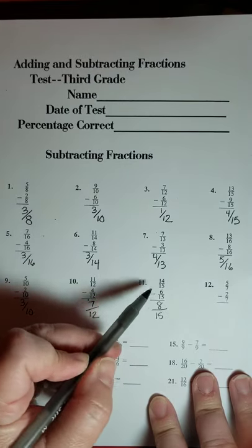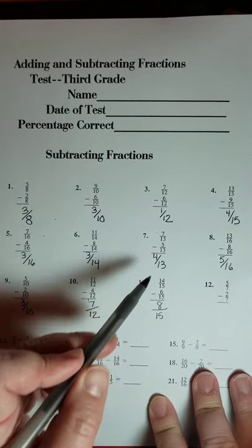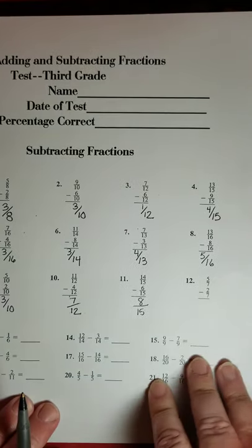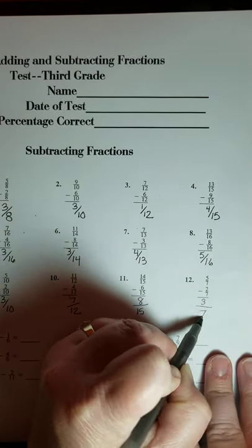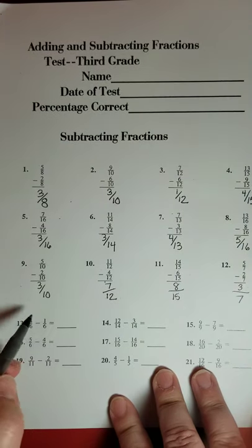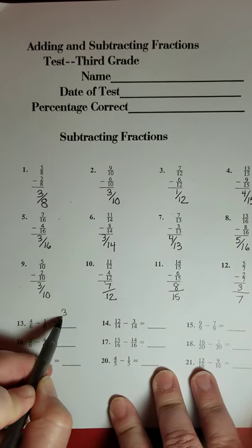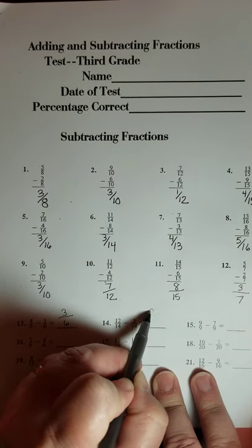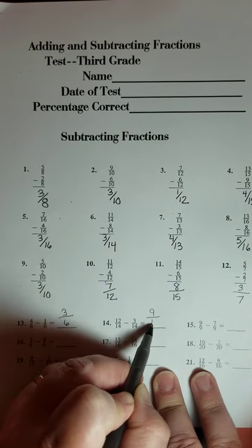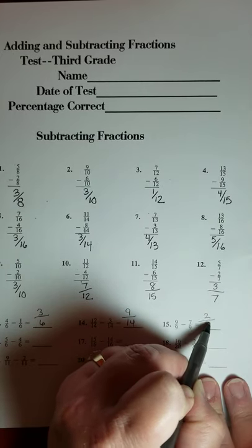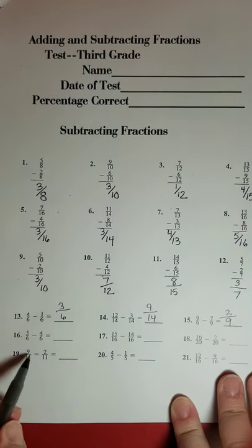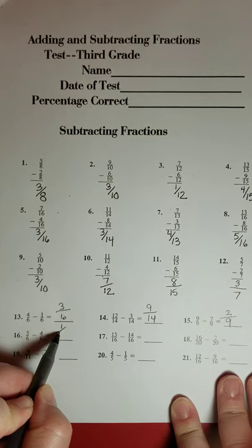14 minus 6 is 8, eight fifteenths. By the way, it doesn't matter if the line is straight across or at a diagonal. You see, I'm used to doing it at a diagonal. Either one is fine. 5 minus 2 is 3 sevenths. 4 minus 1 would be 3 sixths. 12 minus 3 is 9 fourteenths. 9 minus 7 is 2 ninths. 5 minus 4 is 1 sixth.